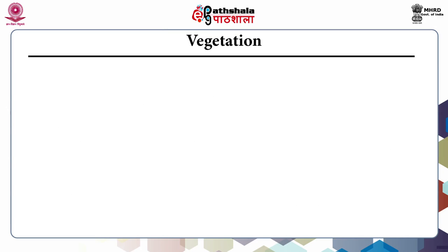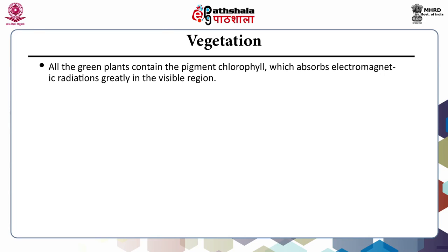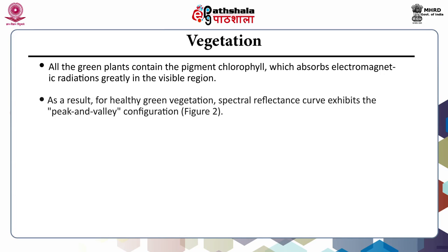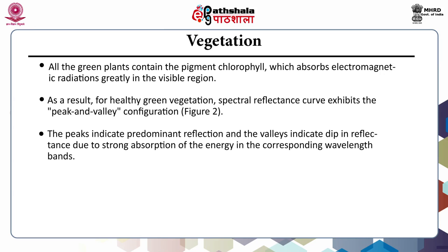The first feature is vegetation. All green plants contain the pigment chlorophyll, which absorbs electromagnetic radiation greatly in the visible region. As a result, for healthy green vegetation, the spectral reflectance curve exhibits a peak and valley configuration. The peaks indicate predominant reflection and the valleys indicate dips in reflectance due to strong absorption of energy in the corresponding wavelength bands.